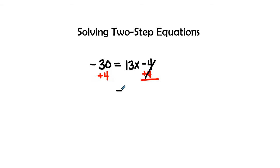When we make sure our equal signs are in line with each other, I'm going to bring down the 13x. And then negative 30 plus 4 gives us negative 26.